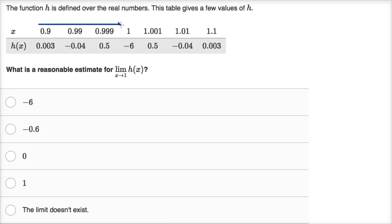We can see what h of x is for those x values as we get closer and closer to x equals one. When we're at 0.9, it's 0.003. Then when we get even closer to one, the value of our function is negative 0.04. Then even closer, h is 0.5. So we have this oscillation in sign, and it seems like the absolute value is getting larger and larger.